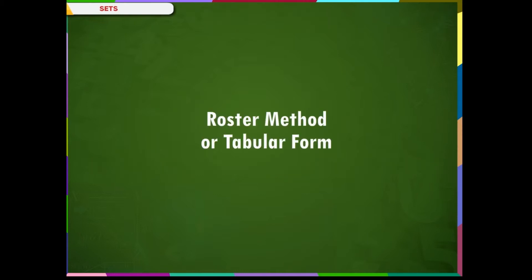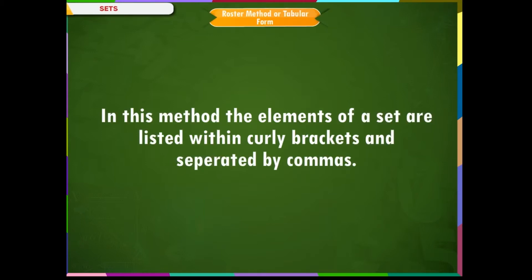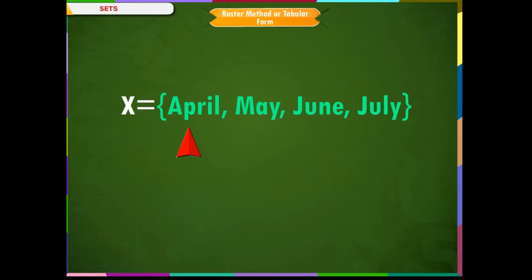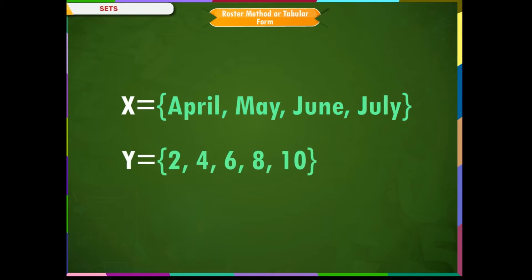Roster method or tabular form. In this method, the elements of a set are listed within curly brackets and separated by commas. For example, X = {April, May, June, July} within curly brackets. Y = {2, 4, 6, 8, 10} within curly brackets.